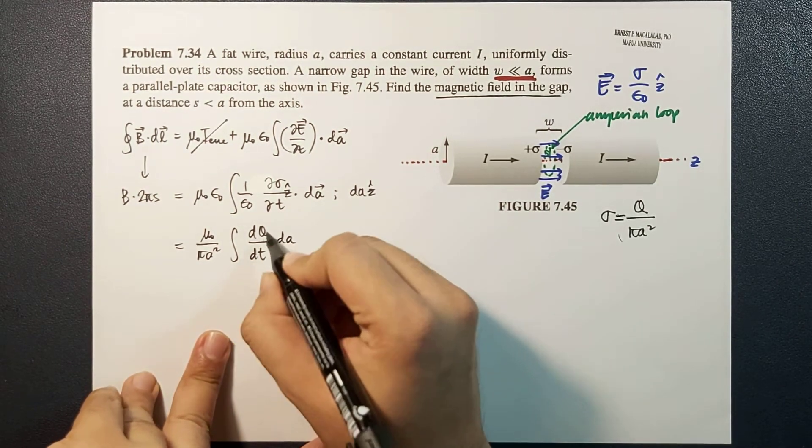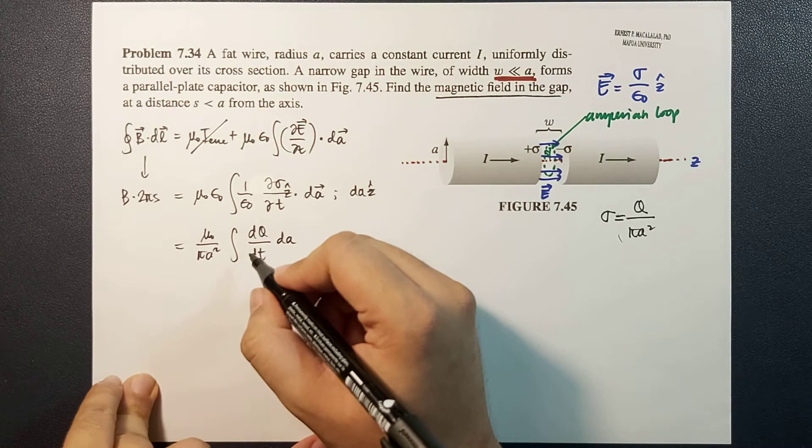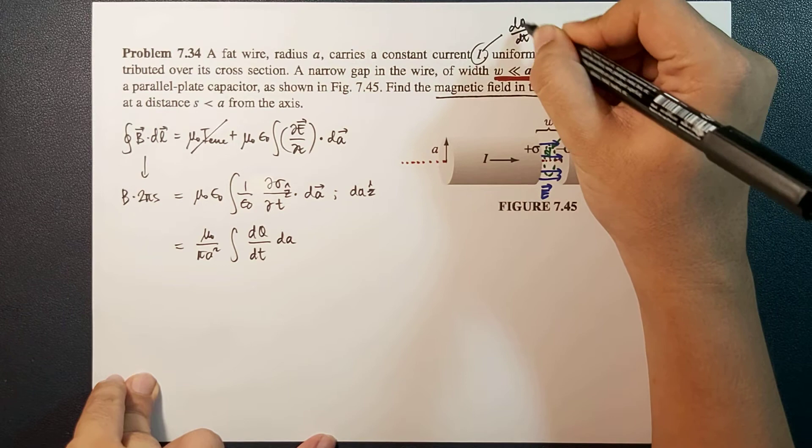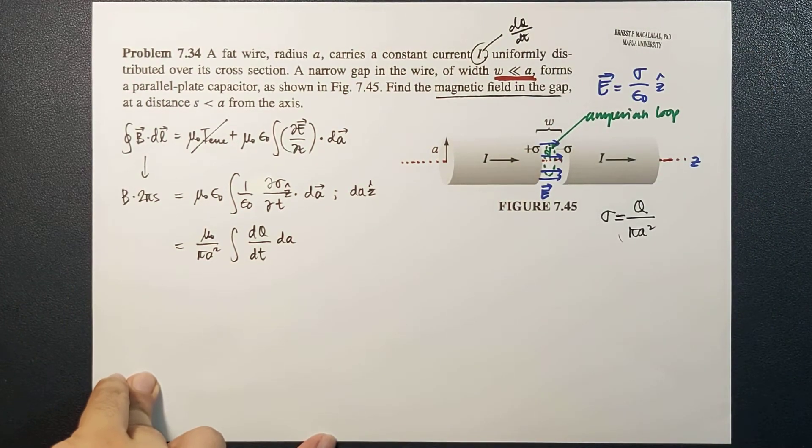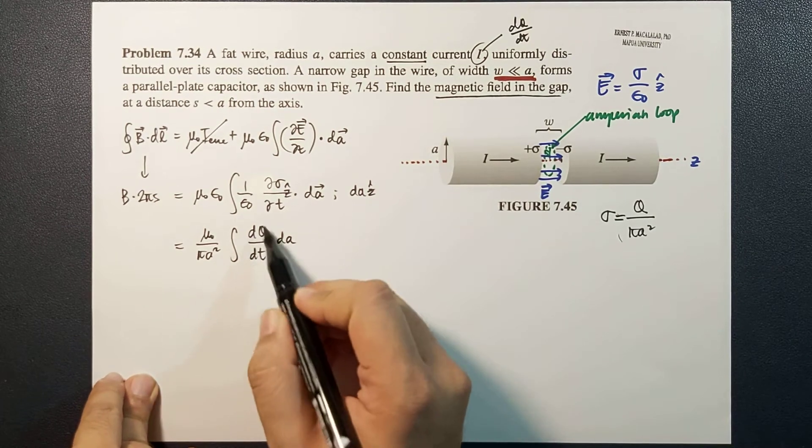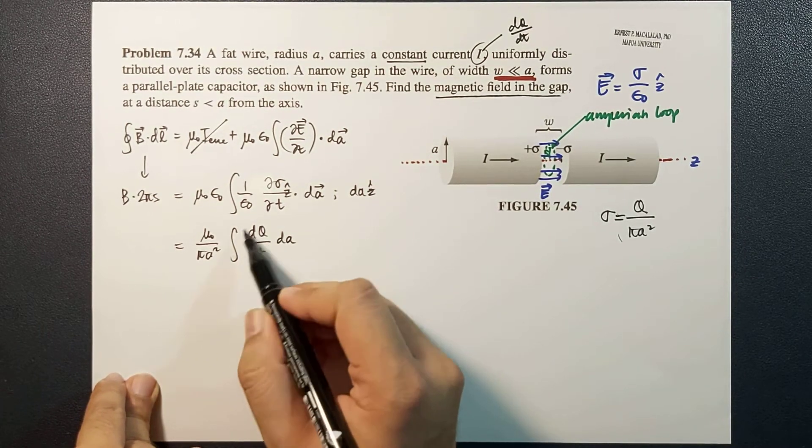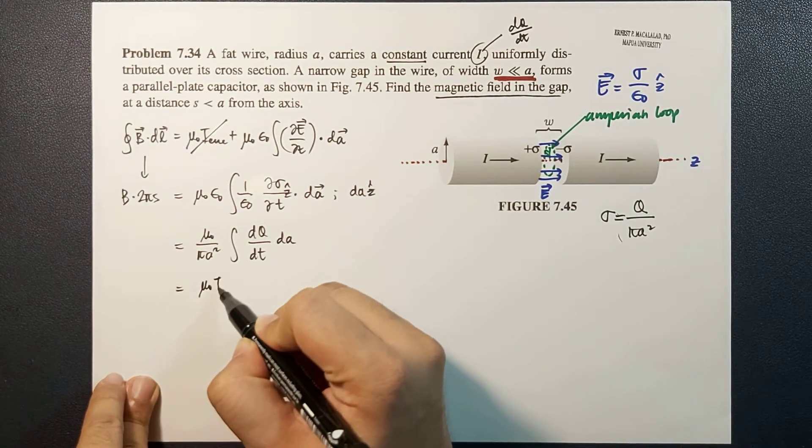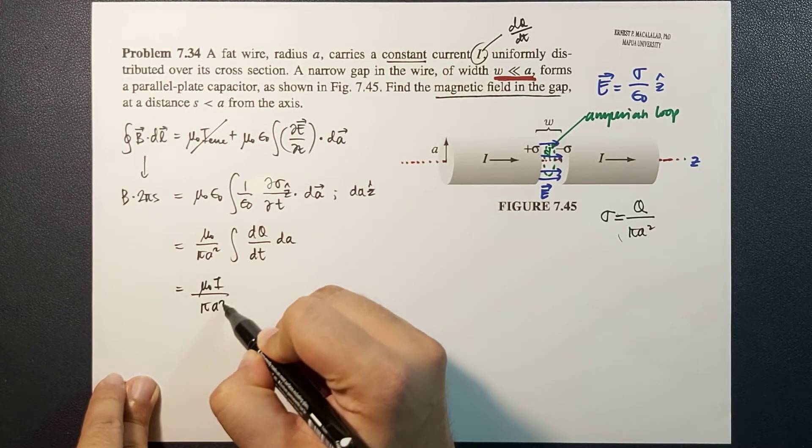But we know that derivative of q with respect to time is I. Remember, this is dq/dt or derivative of q with respect to time, which is a constant as mentioned here. So we can take this parameter outside the integral as well. So this now becomes mu naught I over pi A squared.